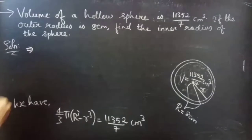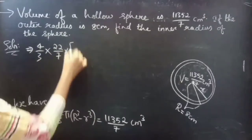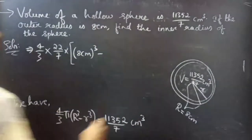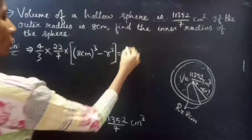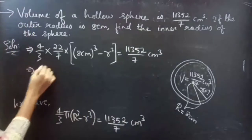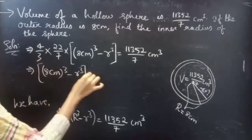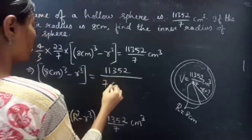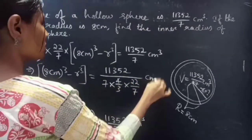Writing π as 22/7 and substituting capital R equals 8 centimeter: 4/3 into 22/7 into (8³ minus r³) equals 11352/7. Rearranging, 8³ minus r³ equals 11352/7 divided by (4/3 into 22/7), which gives 11352 times 3 times 7 divided by (7 times 4 times 22) centimeter cube.